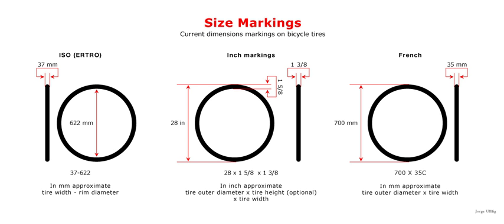References include International Standard ISO 5775-1:1997, Bicycle Tires and Rims — Part 1: Tire Designations and Dimensions; International Standard ISO 5775-2:1996, Bicycle Tires and Rims — Part 2: Rims; and Japanese Standard JIS D9421.